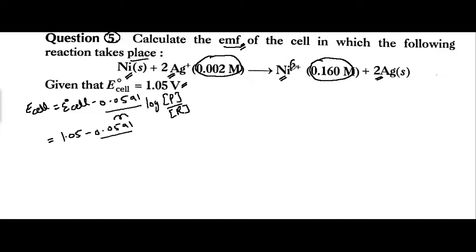Two electrons are being lost or gained, so the value of n will be 2. We write n = 2 in place of n.